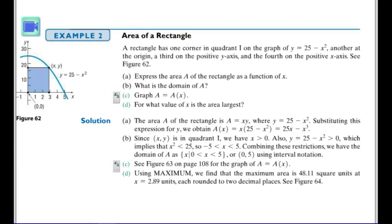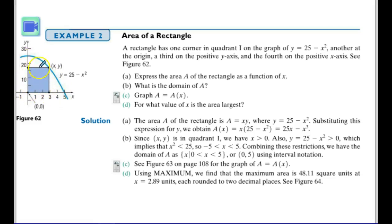Here's example number two. We're finding the area of a rectangle using similar methods. I have a rectangle with one corner in quadrant one lying on the graph of y equals 25 minus x squared — another parabola. One corner of the rectangle is on this graph, another point is at the origin, and the other two points lie on the x and y axes. First I want to express the area of the rectangle as a function of x.